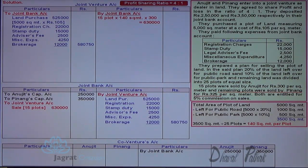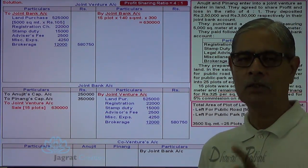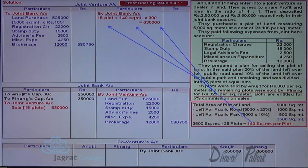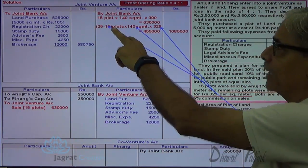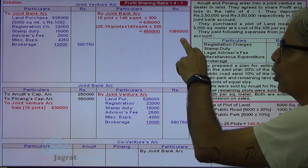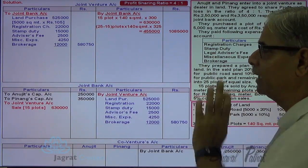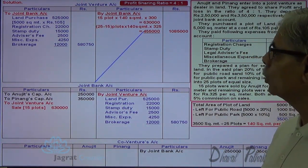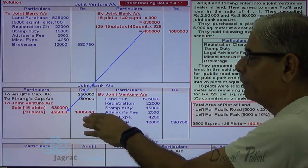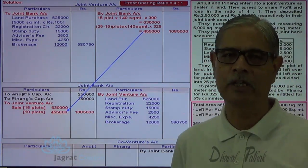The remaining plots are sold at 325 per square meter. The remaining plots are 25 minus 15 = 10 plots. Each plot is 140 square meters. So the sales revenue is 10 plots × 140 × 325 = 4,55,000. This amount of revenue is credited to joint venture account. The sales proceeds are presumed to be deposited in the joint bank account — joint bank account is debited as the receiver, revenue credited to joint venture account.